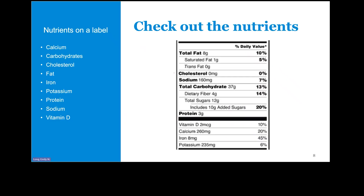Next you want to check the nutrients included on the food. Remember, all values are based on consuming one serving of the food. The nutrients listed on the label include total fat, cholesterol, sodium, carbs, proteins, and our vitamins and minerals.